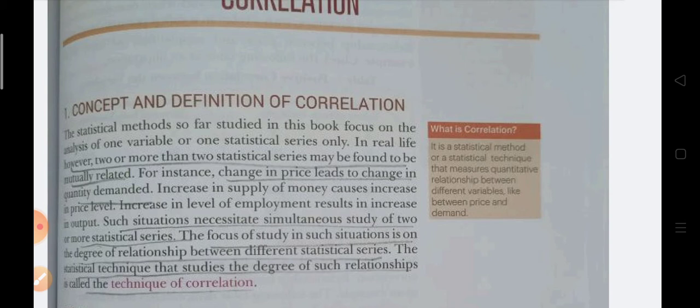Correlation can be found by three methods: 1. Scattered diagram method (graphically), 2. Karl Pearson coefficient method, 3. Spearman's rank correlation method. In today's video, we will not discuss the theoretical point of view — instead I will tell you how many types of correlation there are and what degrees are in correlation.